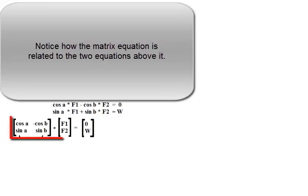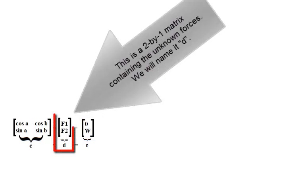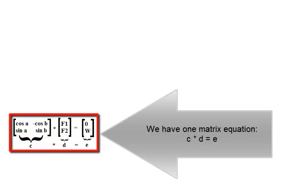Notice how the matrix equation is related to the two equations above it. This is a two-by-two matrix, we will name it C. This is a two-by-one matrix, we will name it E. This is a two-by-one matrix containing the unknown forces, we will name it D. We now have one matrix equation, C times D equals E.